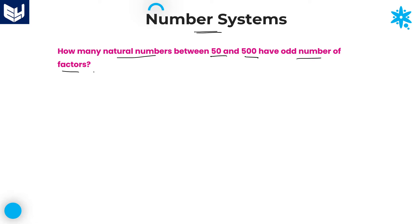To solve this problem, first of all, we must know for which numbers we are having odd number of factors. That is very important. Without knowing this point, it is not at all possible to solve the problem.